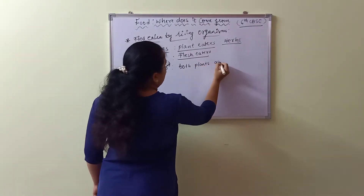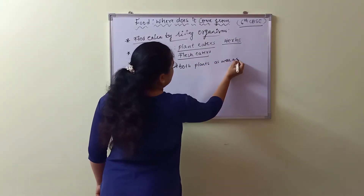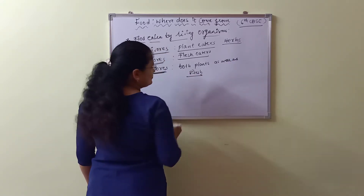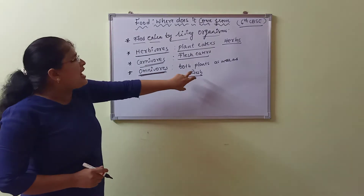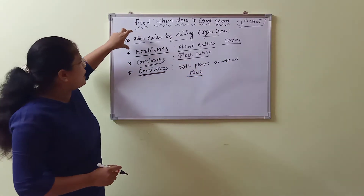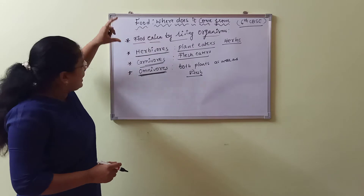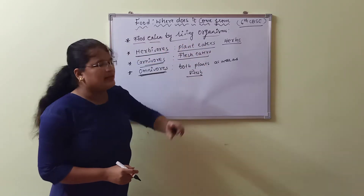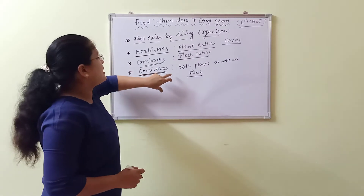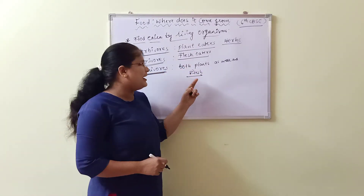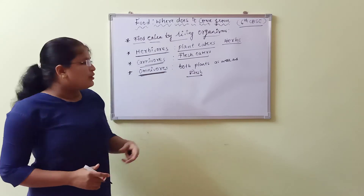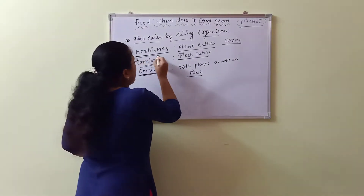The third and final type is omnivores. These organisms eat both plants as well as flesh, meaning animal meat. Omnivores depend on plants as well as other animals for their food.